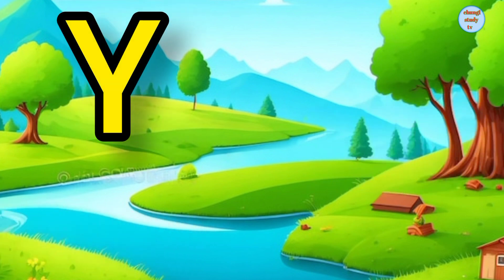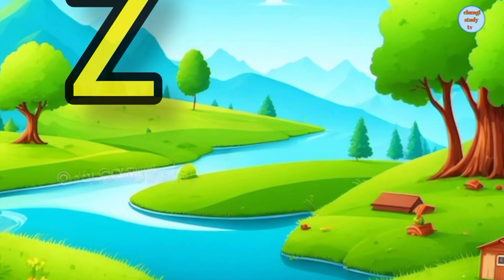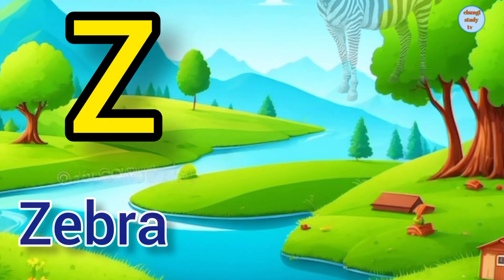Y. Y for Yo-Yo, Yo-Yo means Yo-Yo. Z. Z for Zebra, Zebra means Chittidhar Ghoda.